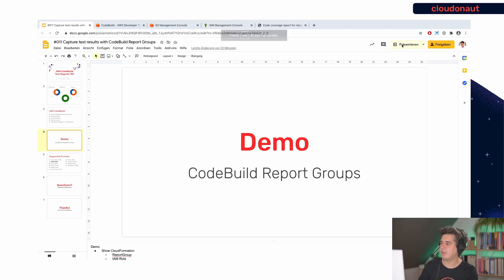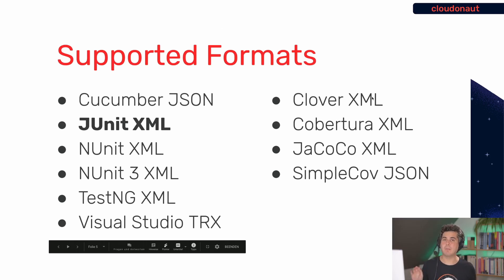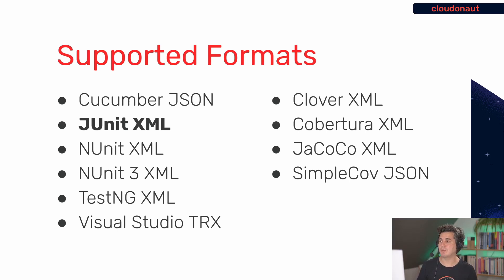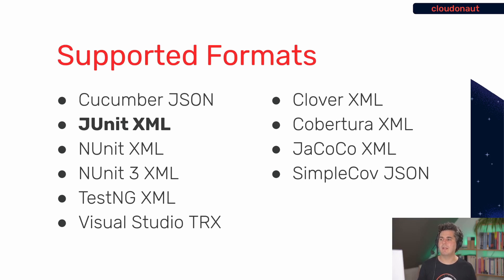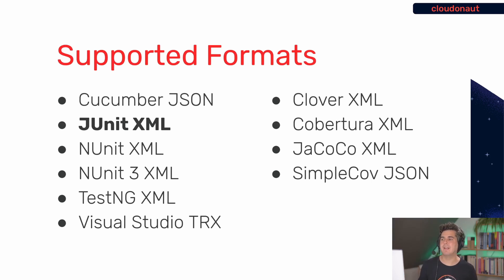A couple more details on supported formats. By default, report groups assume JUnit XML format since JUnit is one of the most popular testing frameworks, but there are many other formats supported — NUnit and TestNG for example if you're in the C# or Java space. For coverage, there are also several options. In my case I used Clover XML which was supported out of the box. Let me know in the comments if your language and coverage format is supported, particularly curious about C# and Go.